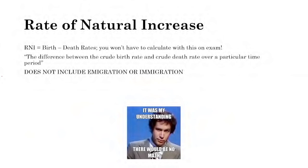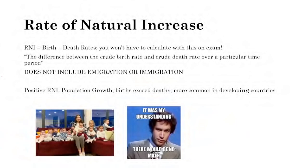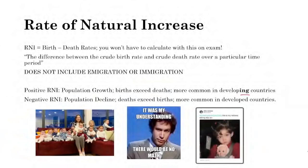A positive natural increase rate means more births than deaths — population growth, more common in developing countries. A negative natural increase rate indicates population decline, when deaths exceed births, which is more common in developed countries that have already established urban cities, economic policies, and organizations.